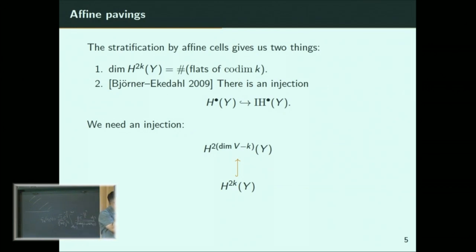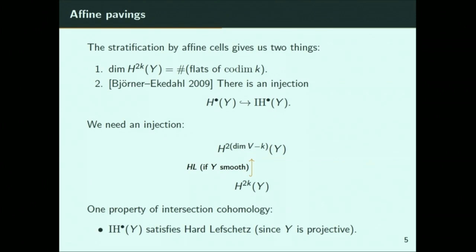To prove the top-heavy conjecture, we need an injection from this degree of cohomology to the next one, which would say there are more flats at one level than another. If Y were smooth, we'd have the Hard-Lefschetz theorem giving us that injection. But Y is not smooth — it's singular. So rather than singular cohomology, the right thing to look at is intersection cohomology, a nice cohomology theory for singular varieties. It turns out that singular projective varieties do have the Hard-Lefschetz theorem for intersection cohomology.